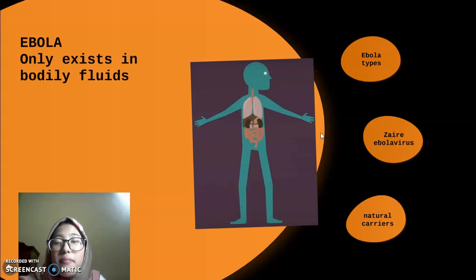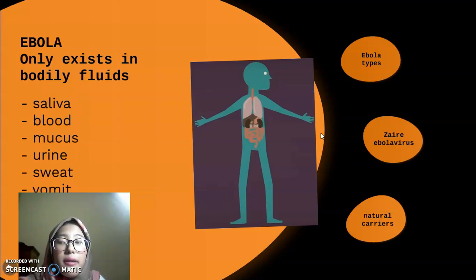Ebola only exists in bodily fluids, such as saliva, blood, mucus, sweat, vomit, or feces. In order to spread, these must be transmitted from an infected person into a healthy body. It can also pass through breaks in the skin.